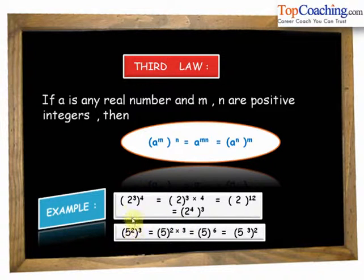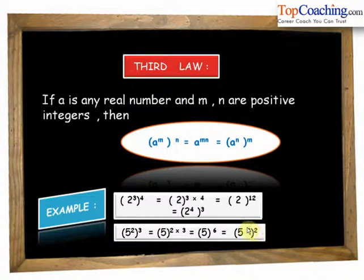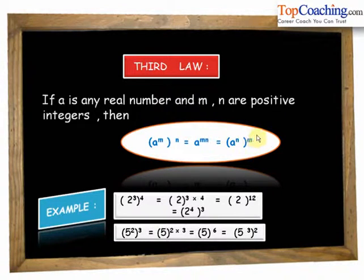Similarly, 5 squared to the power of 3 equals 5 to the power of 2 into 3 — we multiply both exponents — giving 5 to the power of 6. This can also be written as 5 cube whole square. So a to the power of m whole to the power of n equals a to the power of m into n, which is also equal to a to the power of n whole to the power of m.